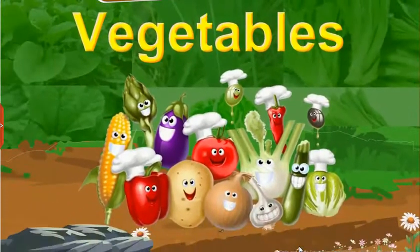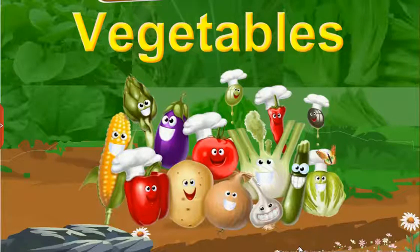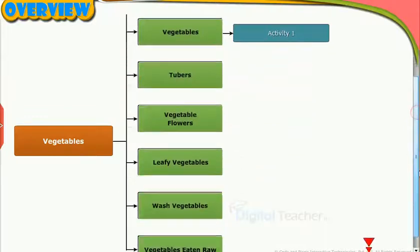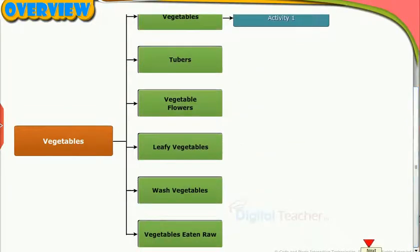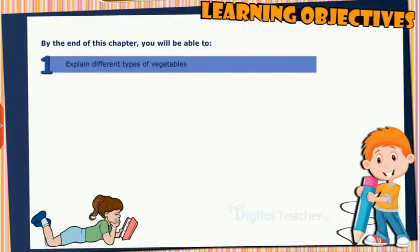Welcome to the chapter, Vegetables. This slide presents the overview of the chapter. Learning Objectives: By the end of this chapter, you will be able to explain different types of vegetables.